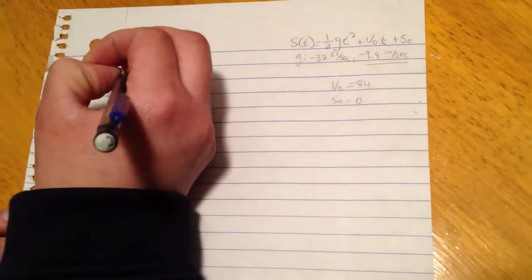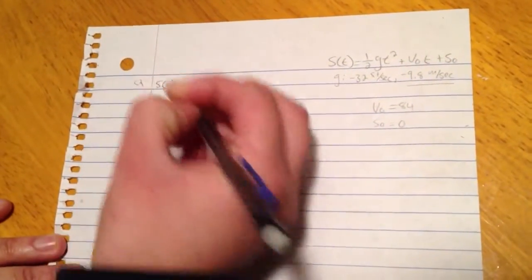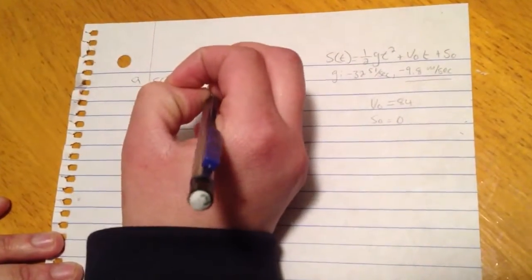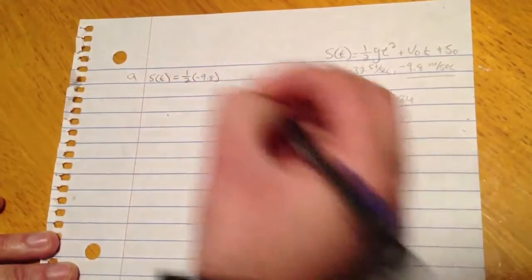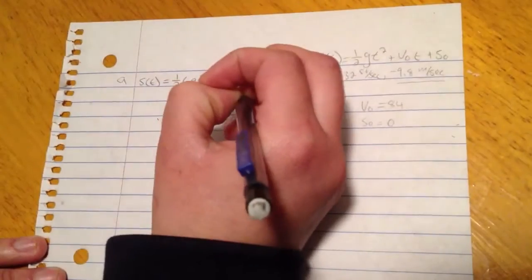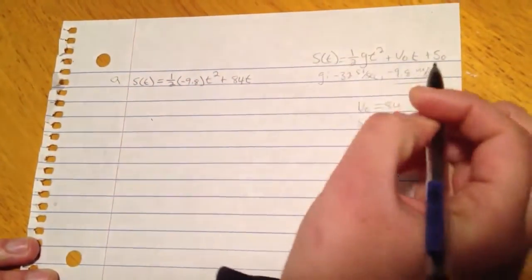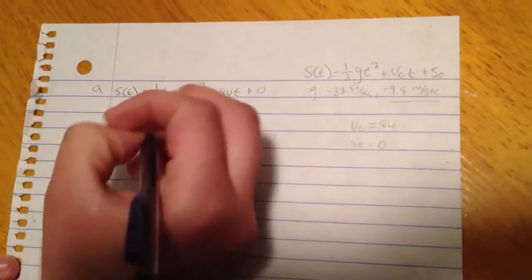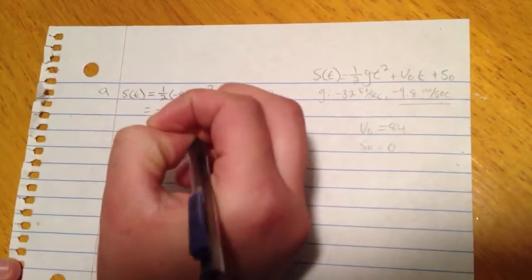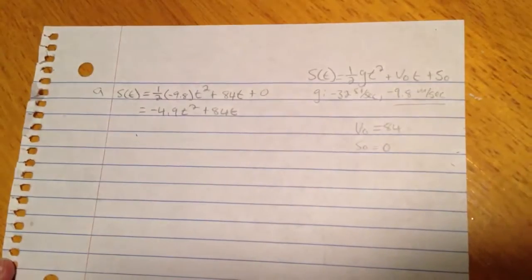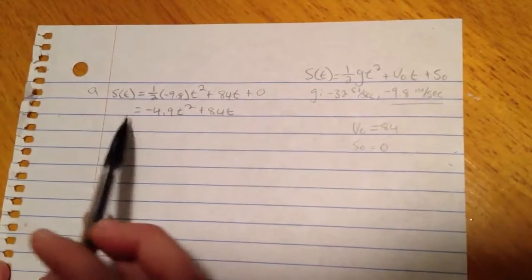So we're going to start out by writing it down as s(t) equals one-half of negative 9.8 times t squared, plus the initial velocity times t, plus position, which is just zero. So this is going to give us negative 4.9 times t squared plus 84t. And that's going to be your position function.